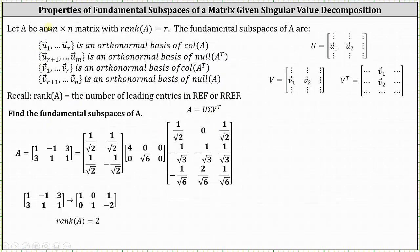If A is an M by N matrix with rank R, then the fundamental subspaces of A are given as follows. The set containing the vectors U sub one through U sub R is an orthonormal basis for the column space of A. Remember, if vectors are orthonormal, they are unit vectors that are also orthogonal or perpendicular. We find the U vectors from the columns of matrix U. The set containing the vectors U sub R plus one through U sub M is an orthonormal basis for the null space of A transpose.